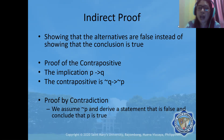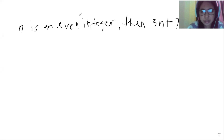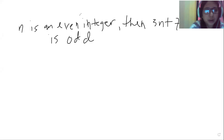Let us do that by answering a particular example. So let's have an example: if N is an even integer, then 3N plus 7 is odd. So this is our conclusion Q.